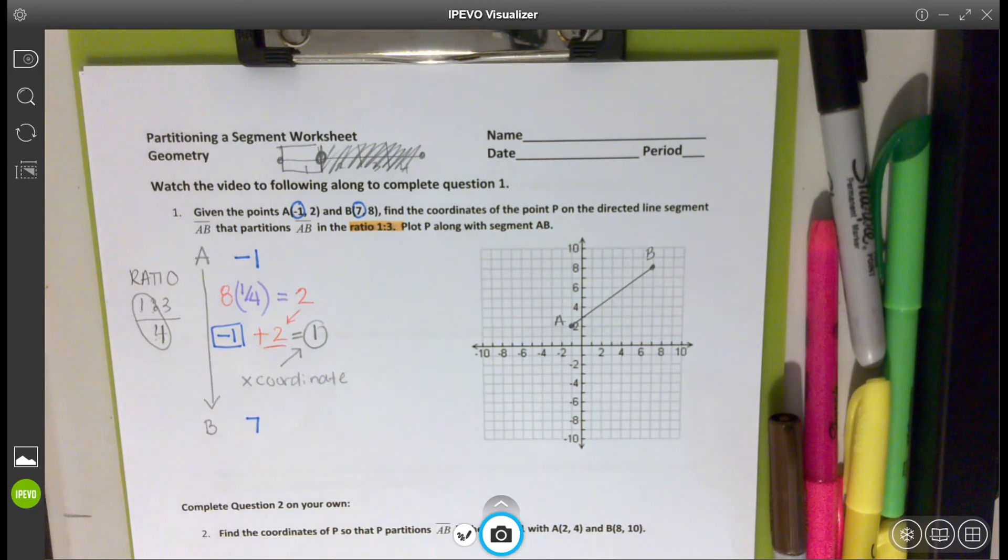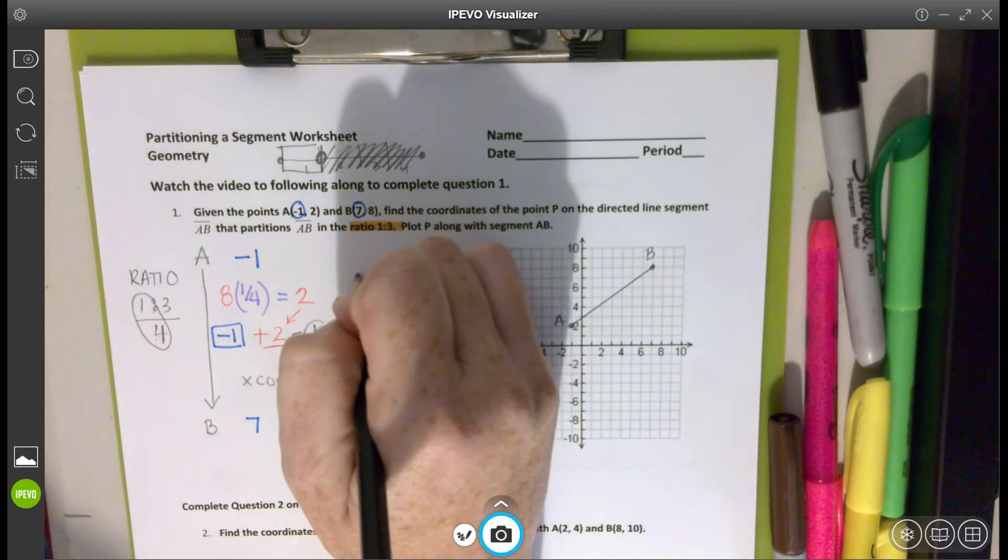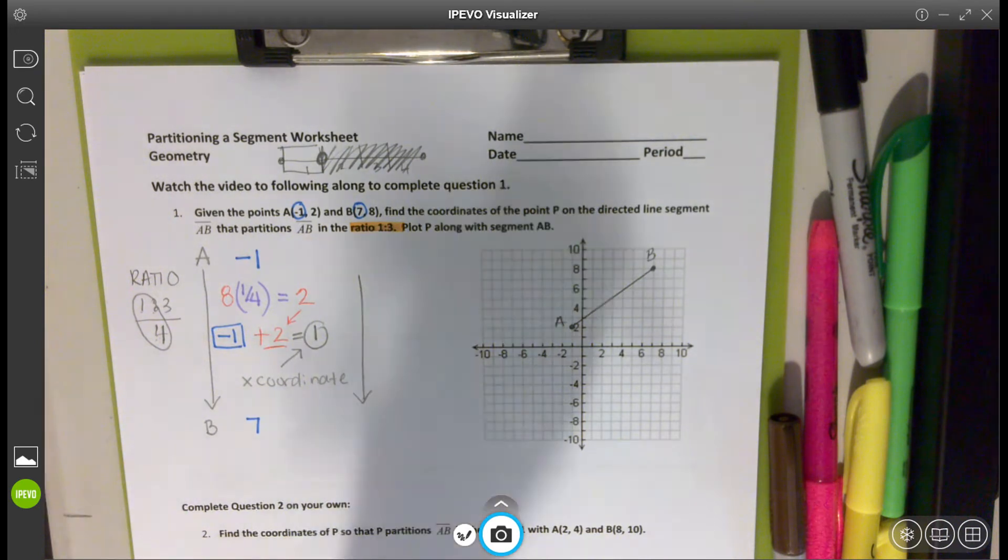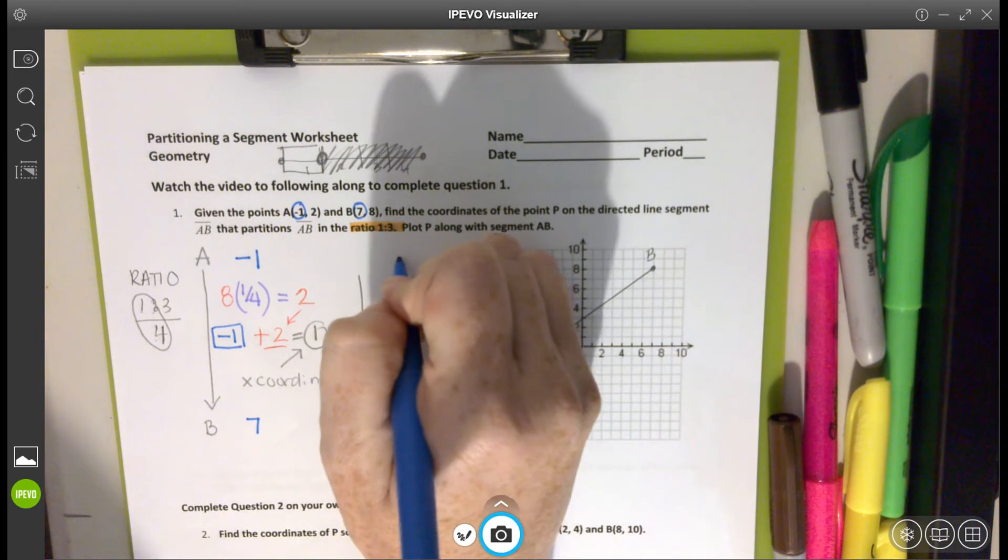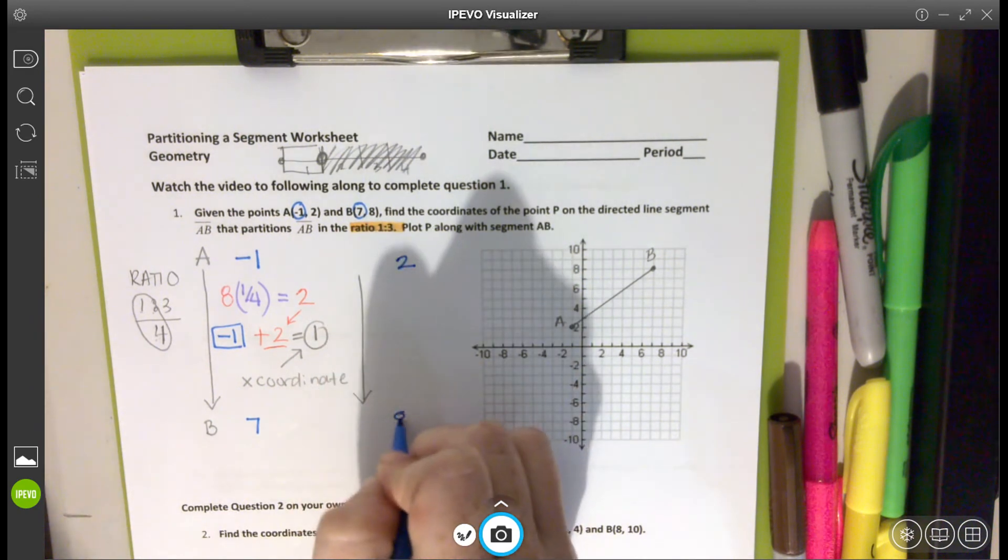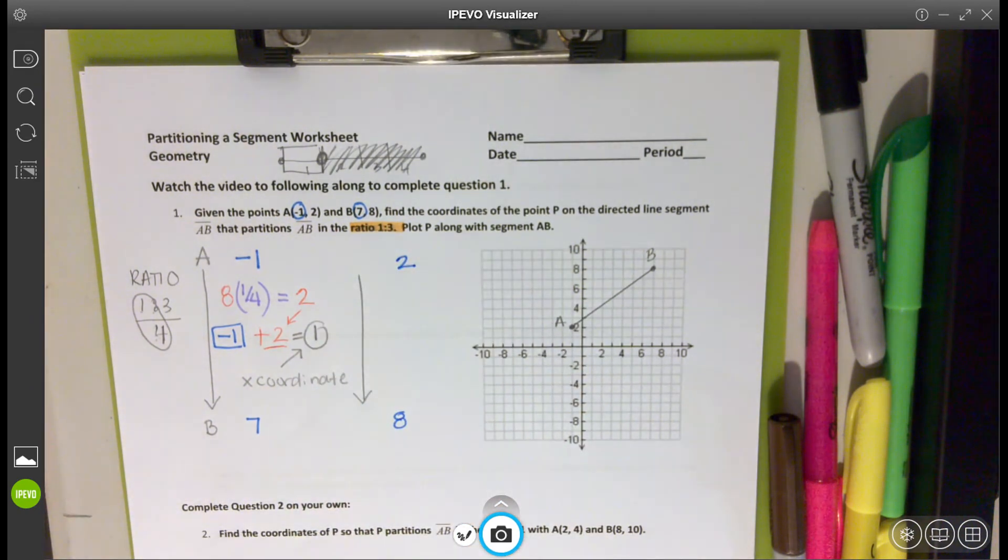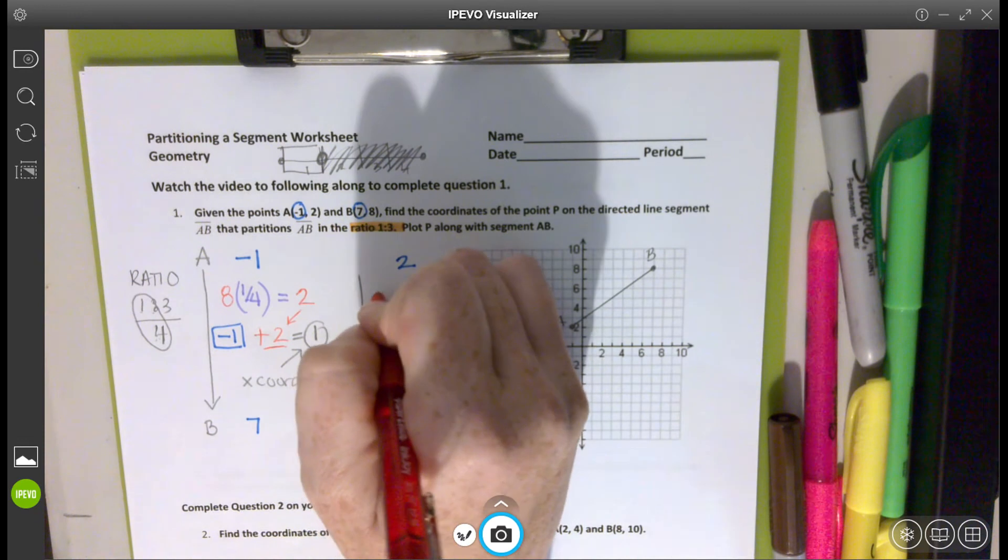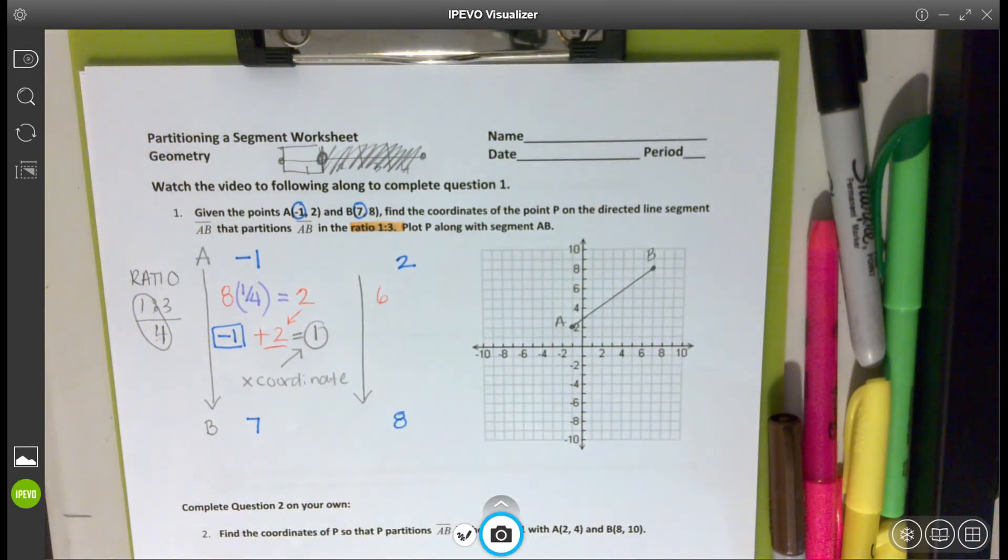I'm going to repeat this process for my Y value. I'm drawing another line again, just because I like to break up my work so it doesn't overlap. And then I'm going to start the same process over again. So here, my Y value, going back to my original ordered pairs, is two ending at eight. So how many units am I traveling from two to eight on my Y axis? That is six in total.